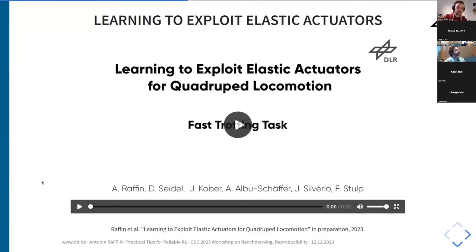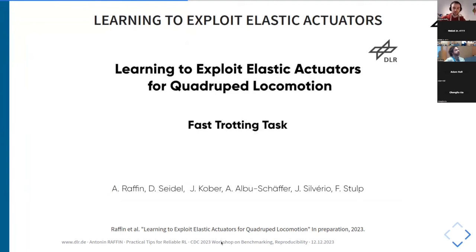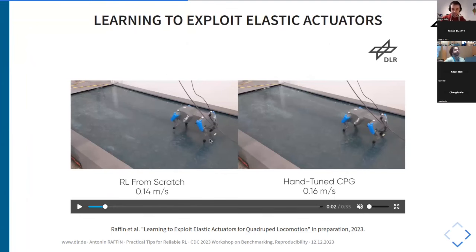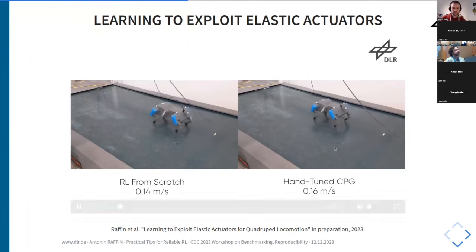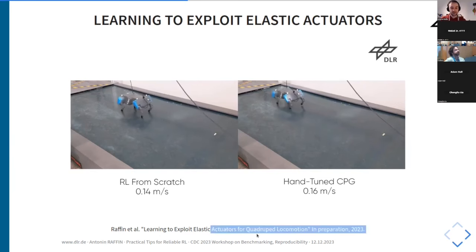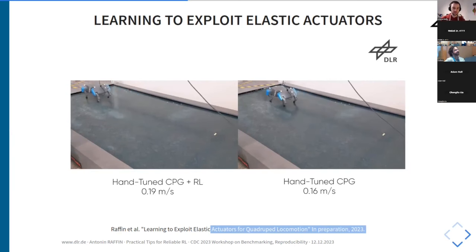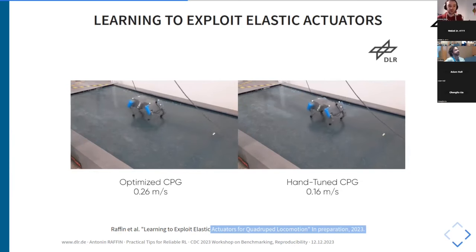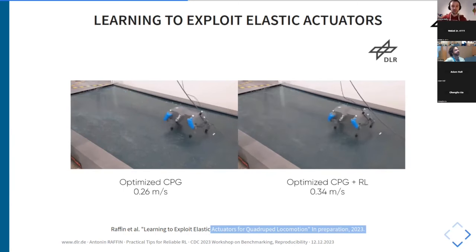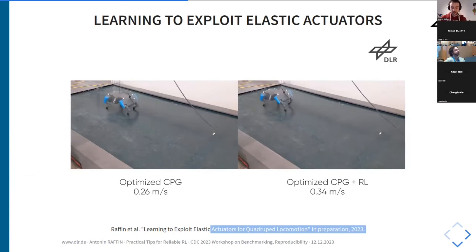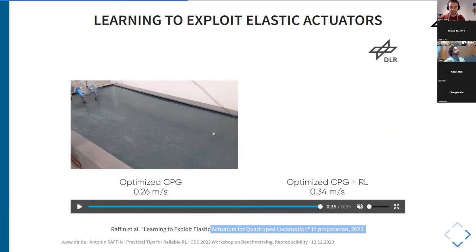Every robot video I'll show today uses Stable Baselines, the Zoo, and maybe SB3-contrib or SBX. Here I was comparing how to learn fast to walk with an elastic quadruped, comparing different levels of prior knowledge — RL from scratch on the left, then adding prior knowledge via an open loop controller, a central pattern generator, and then testing different combinations with RL. Everything is learned on the real robot. The best result is obtained when optimizing the open loop controller directly on the real robot combined with RL. For real robot experiments, having reliable implementations and reproducible experiments is very important.